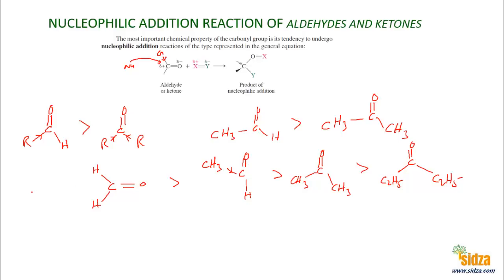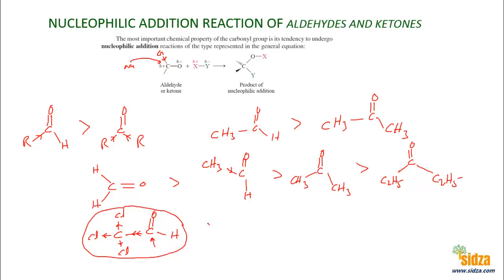What if you attach an electron-withdrawing group to the carbonyl? If you attach something that withdraws electrons from the carbonyl group, that will increase the reactivity. For example, a molecule like chloral (CCl3CHO) has chlorine — an electron-withdrawing group — attached to the carbon next to the carbonyl. Chlorine withdraws electrons, making the carbonyl carbon more electron-deficient, so the nucleophile attacks faster. Therefore chloral is more reactive than even formaldehyde.